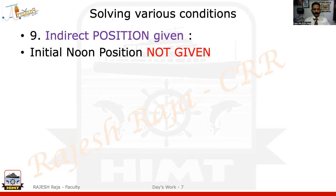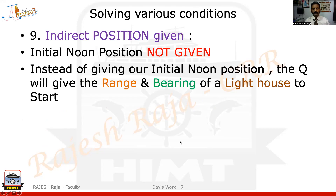Indirect position means the initial noon position of the vessel is not given. They still expect you to do the problem, but the position of the vessel is not given. Instead, they give you a range and bearing of a lighthouse from your vessel, and they give you the lat/long of that particular lighthouse. So you know the position of the lighthouse, but only the range and bearing from you to the lighthouse. Despite this, you're still expected to find the final noon position, resultant CMG, and resultant DMG.